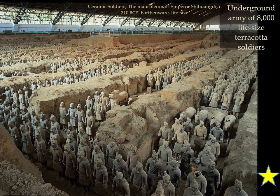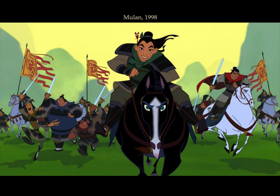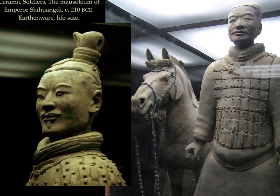Located here is an underground army of about 8,000 life-size terracotta soldiers in the mausoleum of Emperor Shi Huangdi. There are 100 life-size ceramic horses, along with men, all in military formation, facing east with weapons. Facing east is significant because the sun rises in the east, giving the promise of resurrection and renewal. The tomb mound was left alone so as not to disturb the find. The soldiers are all different and individualized, with all details on clothing and facial features carefully observed.